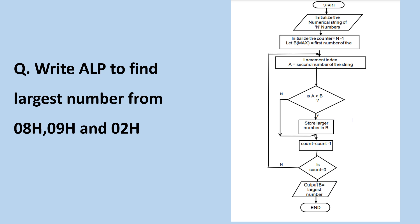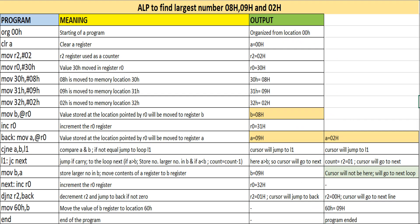In the program we are going to take different memory locations where these three numbers will get stored. The main condition we are going to check is: if A is greater than B, then the larger number will be stored in register B. If the condition is false — if A is not greater than B — then count will be decreased by 1, and the process will continue until count becomes zero. At the end of the program you will find the largest number in register B.